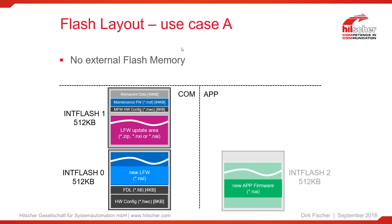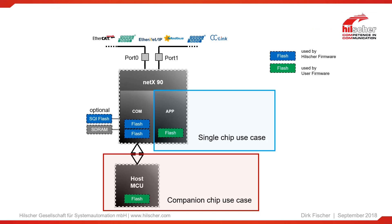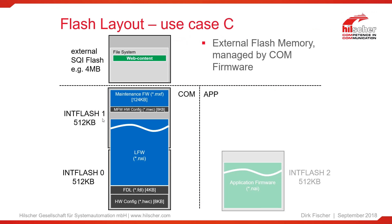That's how flash is used in flash layout use case A, where we do not use external flash memory. Use case C is used for more sophisticated firmware — web server functionality, MQTT, or OPC UA stacks in addition to real-time Ethernet — and requires external SQI memory. The content of internal Flash 0 and 1 is quite similar: we have hardware config, Flash Device Label, and maintenance firmware. The main difference is the update area is not inside the internal flash — it is shifted into the external flash, where a file system is used.